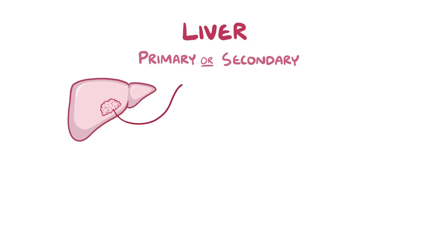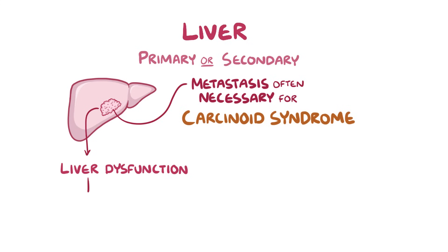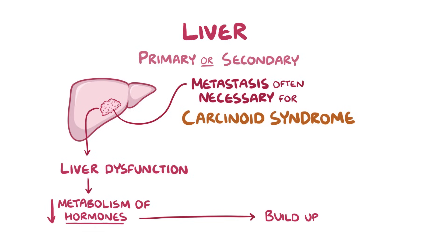Metastasis, especially to the liver, is actually often necessary for carcinoid syndrome to occur. That's because these metastases can lead to liver dysfunction, and this decreases the liver's ability to metabolise the hormones which get released from the neuroendocrine cells. And so they build up, and that can cause symptoms.